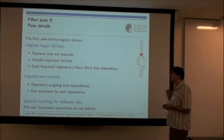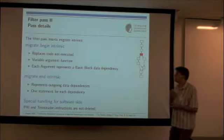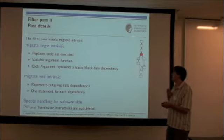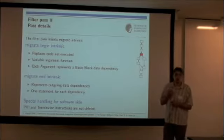The migrate begin intrinsic replaces all the code not executed on the current hardware or software side. The migrate begin intrinsic itself is a variable argument function, which means every incoming data dependency is one argument to the migrate begin instruction.